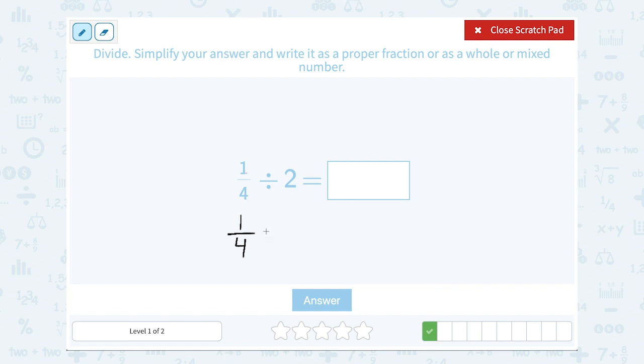1 fourth is going to stay the way it is. And then when I change my division sign to a multiplication, I have to take the reciprocal or the inverse of the second fraction. So think of 2 as being 2 over 1. So the inverse of that is 1 half.